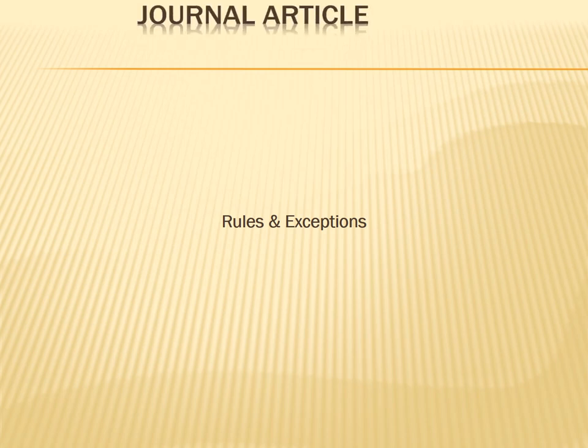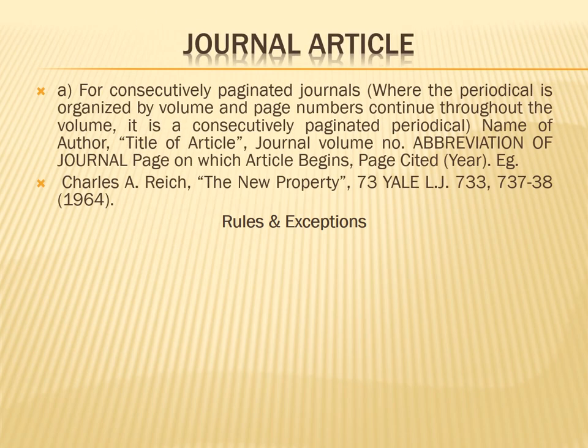Journals have a different format. For consecutively paginated journals — where the periodical is organized by volume and page numbers continue throughout the volume — for example, in a year with four volumes, the first covers pages 1–200, second 101–200, third 201–300, and fourth 301–400. For citing such journals, write first the name of the author, then the title of the article in inverted commas, then journal volume number, abbreviation of journal, page on which the article begins, and the page cited.